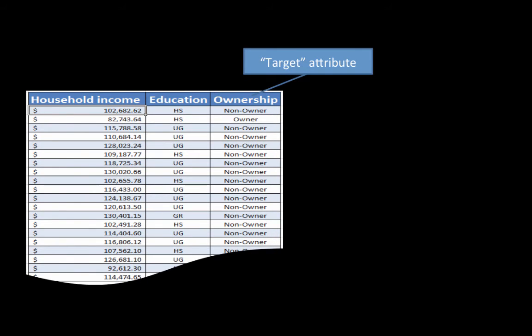So the attribute of interest for us in this example is ownership. That is what we are trying to predict. Given the other information, will the person buy or not? Ownership or you could call it whether they will buy or not. And we'll use the term target attribute to talk about such attributes. So target attribute is the attribute whose value we want to predict. We are building a model to predict the target attribute.